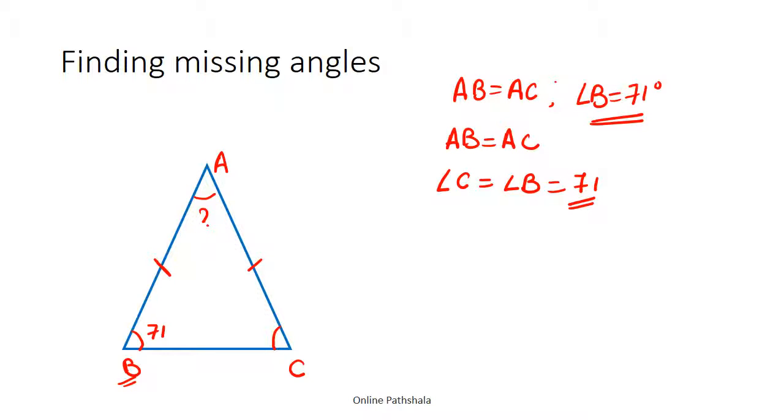Now the sum total of all the angles in a triangle is 180 degrees. So angle A plus angle B plus angle C is 180 degrees. We already know that angle B and angle C are 71, so we just substitute those values. That gives us 180. So angle A plus 71 plus 71 gives us 142.